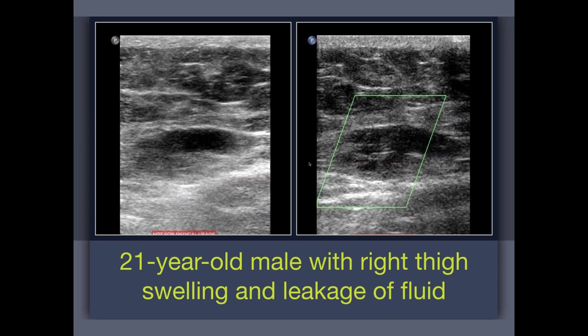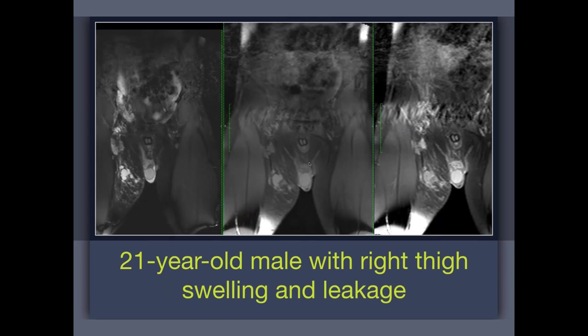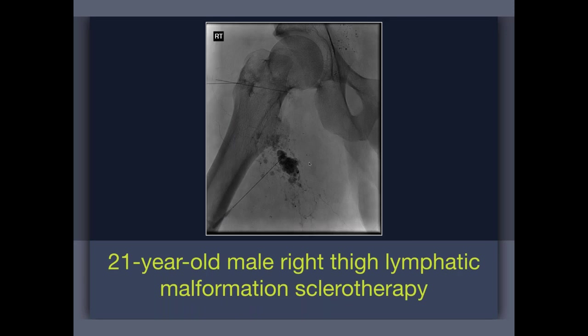Here's that patient — T2 on the left, T1 pre, T1 post. There's some T1 high signal proteinaceous debris. The lesion is non-mass-like with channels, infiltrative, and has both macro and microcystic components. We started with conventional doxycycline sclerotherapy — it didn't work; his chylorrhea didn't resolve. As a Hail Mary, we tried sticking the channels and putting glue in to seal them shut — that didn't work either. But this image shows how dysplastic these lymphatic channels are that drain the malformation. This is not an organized network — the hallmark of venous and lymphatic malformations is channels of these vessel subtypes with disordered connections to the rest of the network.